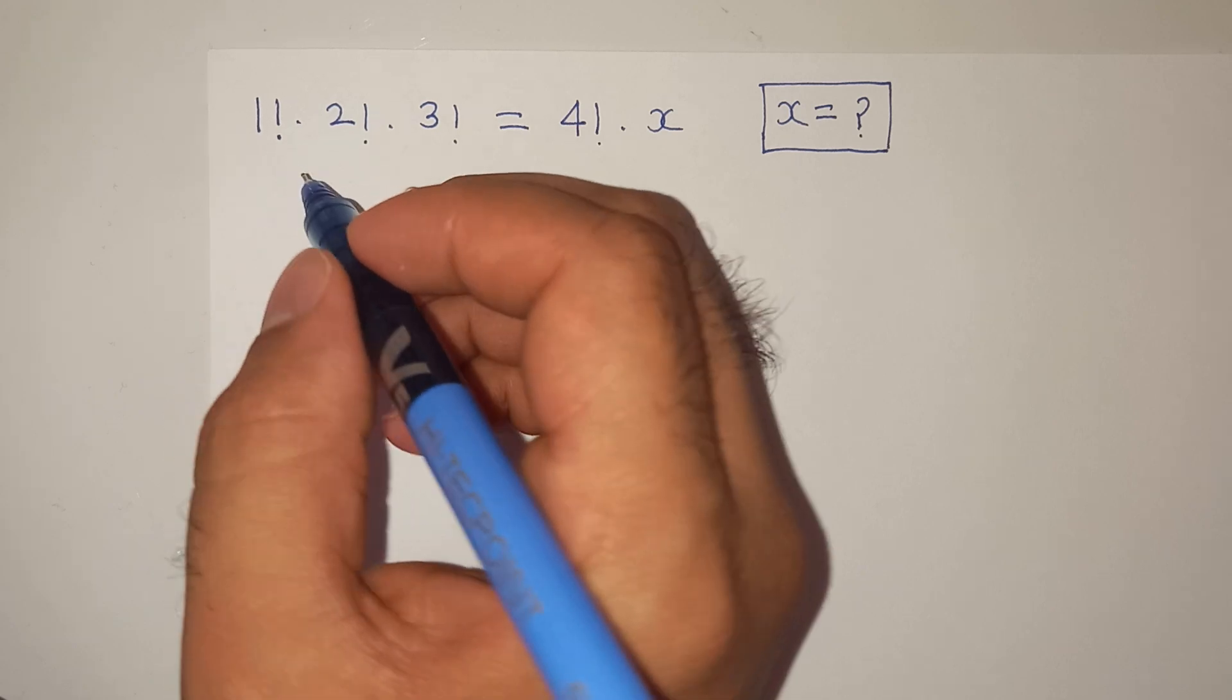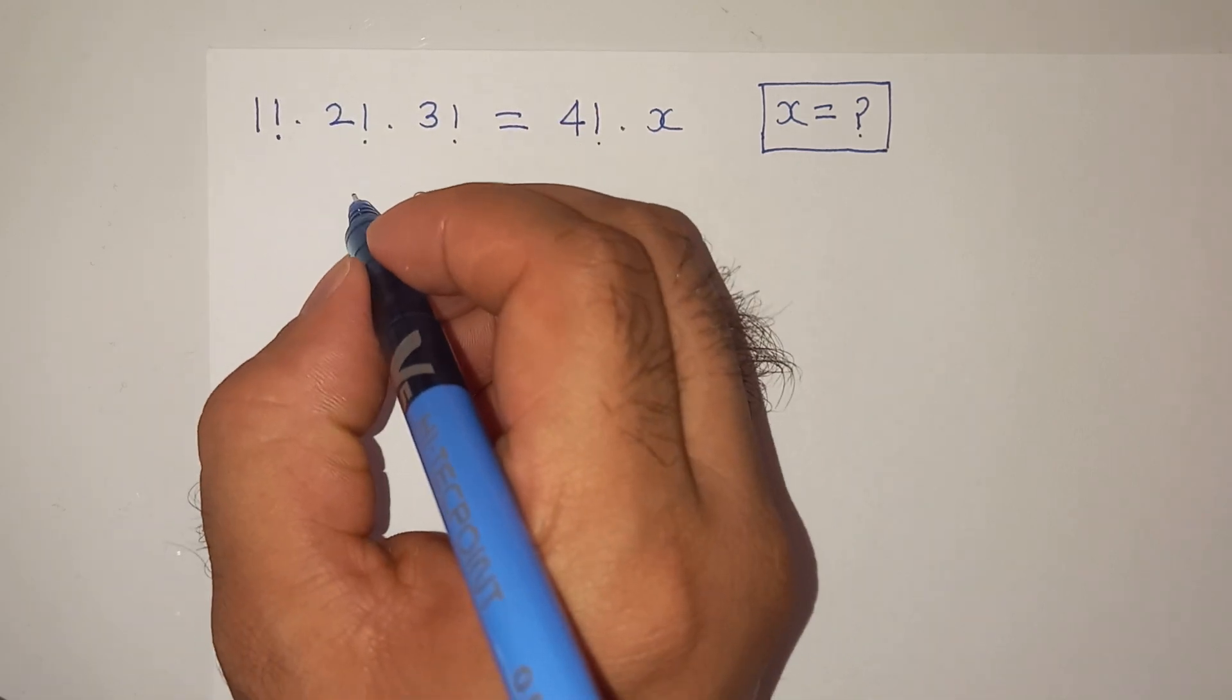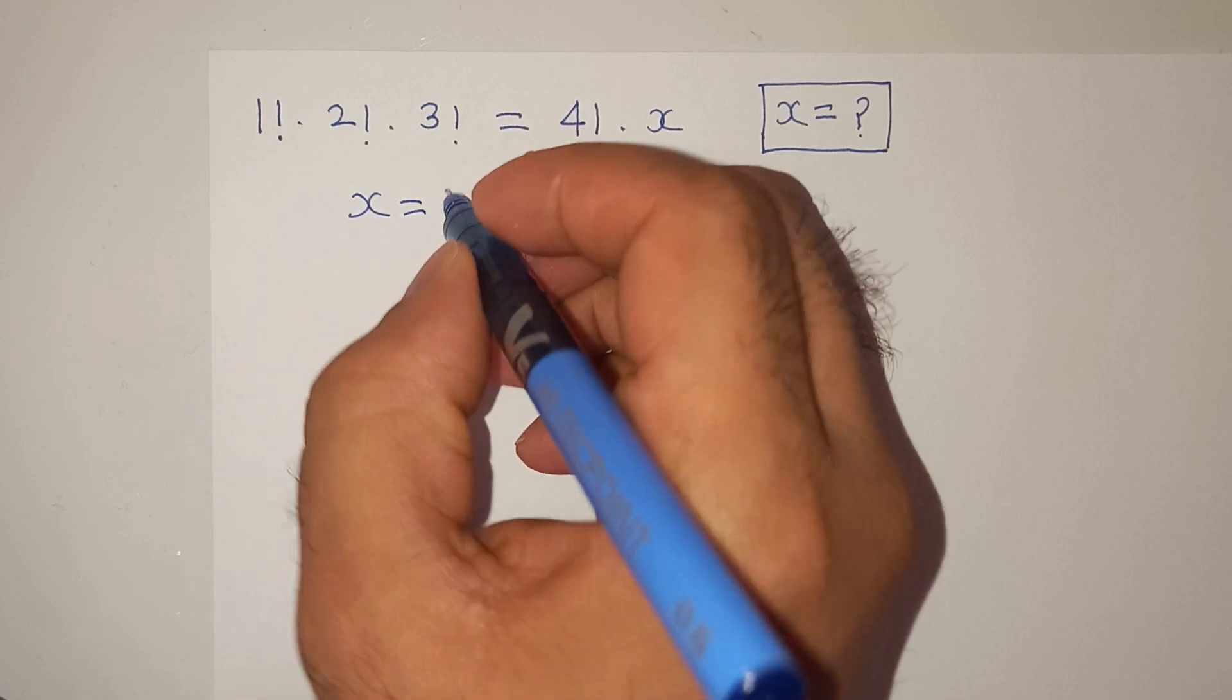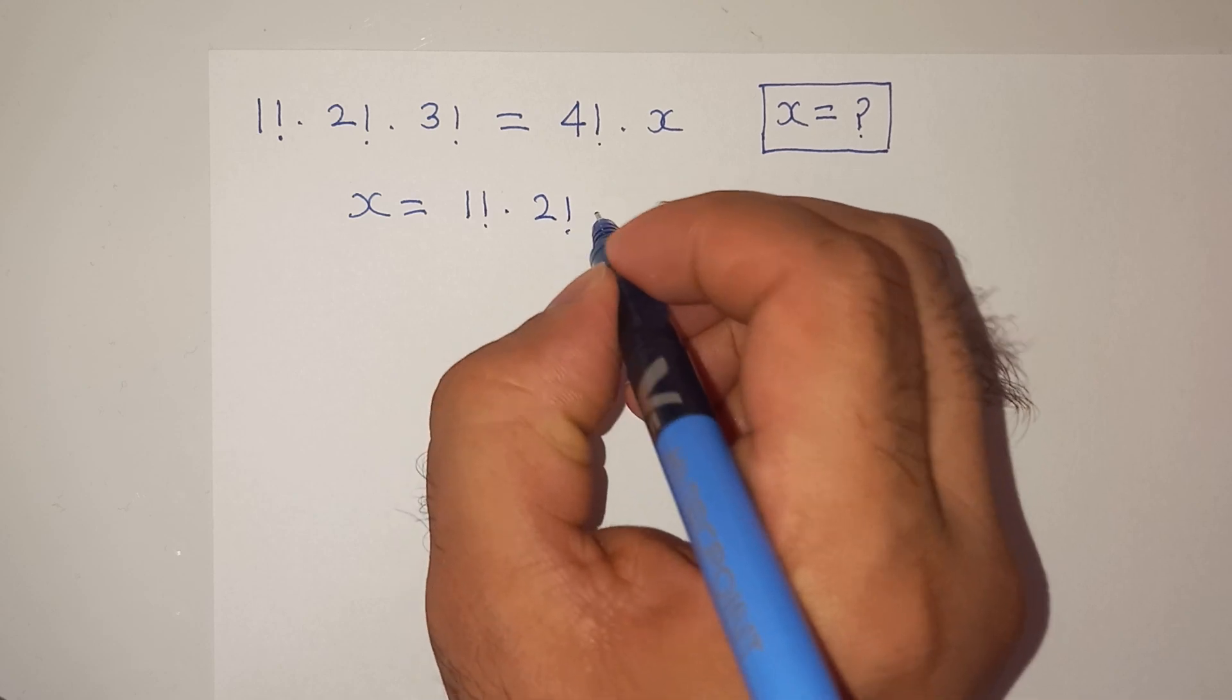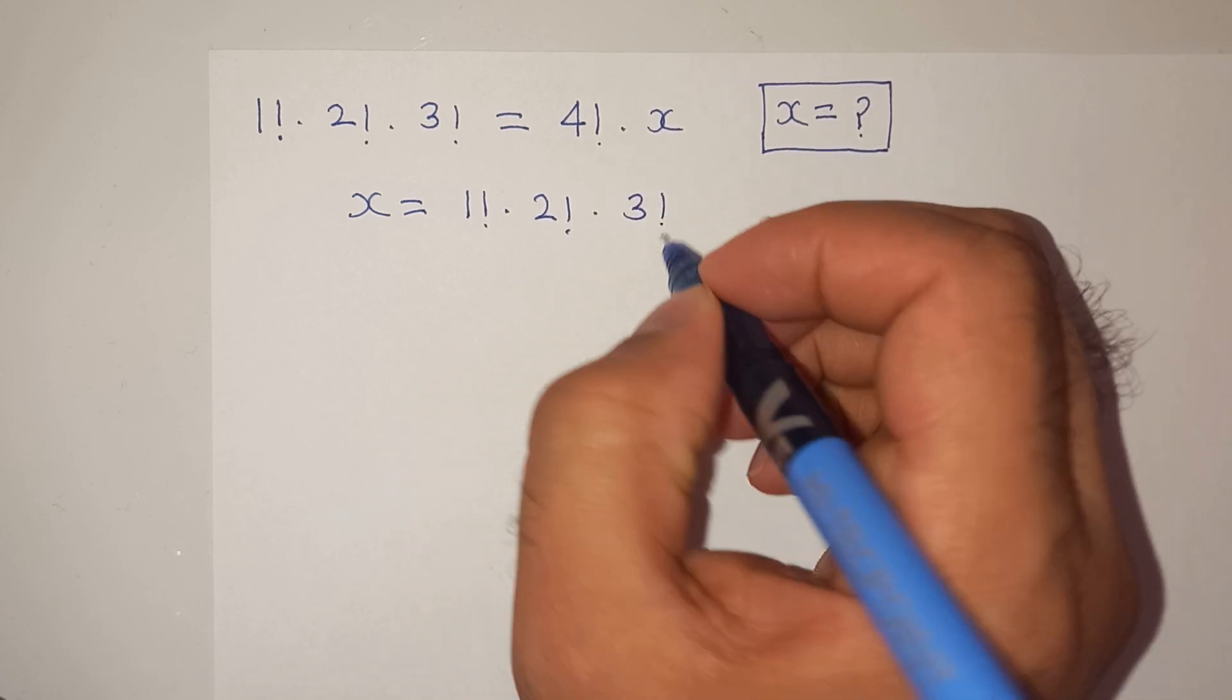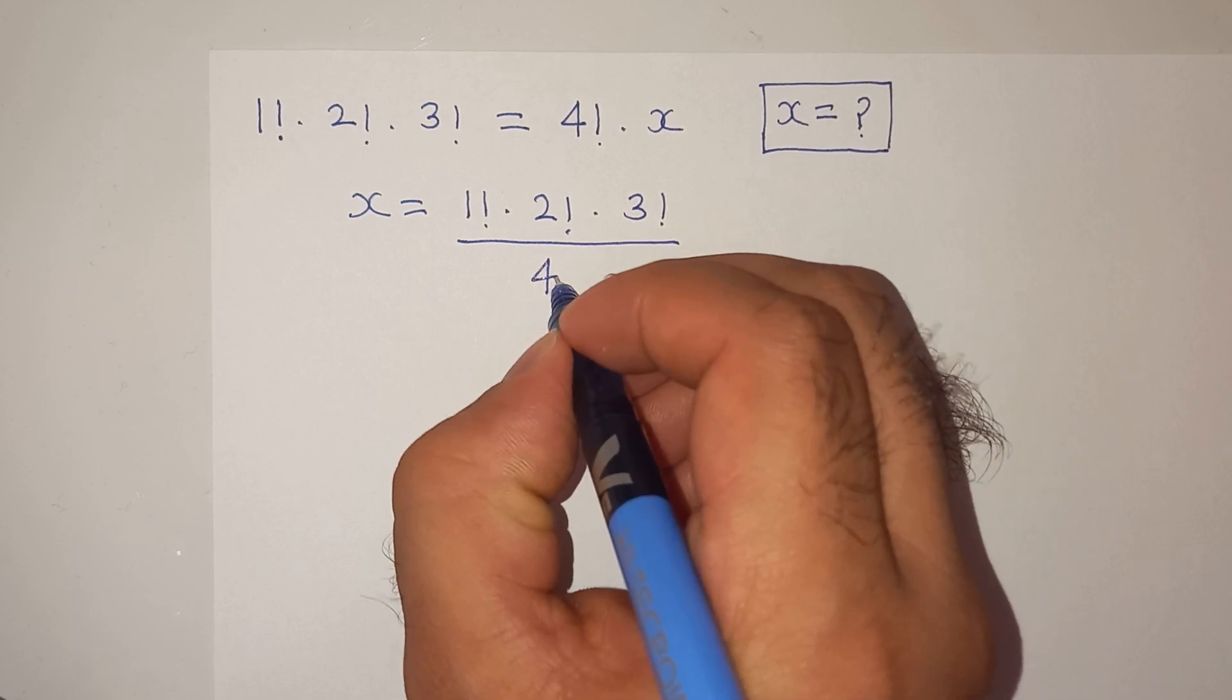So we can write this as x equals to 1 factorial multiplied 2 factorial multiplied 3 factorial and then divided by 4 factorial, right?